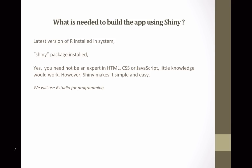So what is needed to build an app using Shiny? First, we need R — specifically the latest version of R installed on the system. We also need the Shiny package. You don't need to be an expert in HTML, CSS, or JavaScript. A little knowledge would work; however, Shiny makes it simple and easy for us. It has functions which integrate the R code and translate it to equivalent HTML.